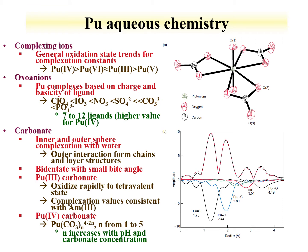General plutonium aqueous chemistry follows oxidation state trends as expected for metal ions: tetravalent plutonium generally has the largest complexation constants, and pentavalent plutonium for a given compound has the lowest complexation constants. The 6 and 3 oxidation states can be relatively close to each other. Similar to other metal ions, behavior with oxoanion ligands follows trends where perchlorates interact very weakly and phosphates interact strongly. Plutonium-4 can have very high coordination numbers — 7 to 12 ligands around the metal center.